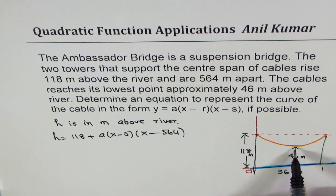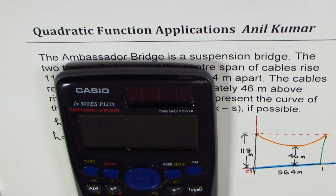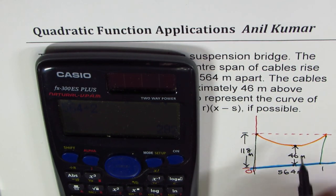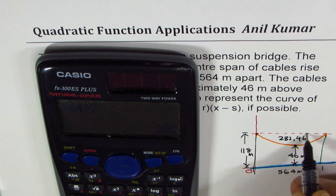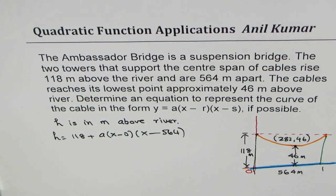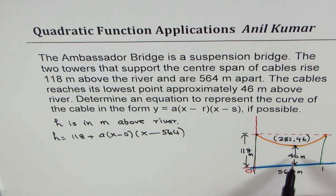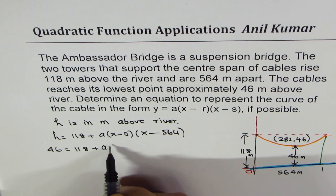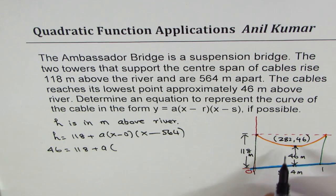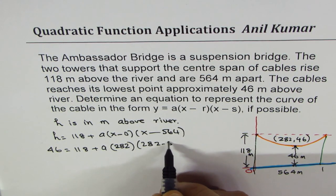This point of 46 meters will be right at the center. Half of 564 divided by 2 gives us 282. So this point is at x equals 282, and the height there is 46 — that's the minimum. So if I substitute 282 for x, my height should be 46 above water level. So we get: 46 equals 118 plus a times 282, times 282 minus 564.